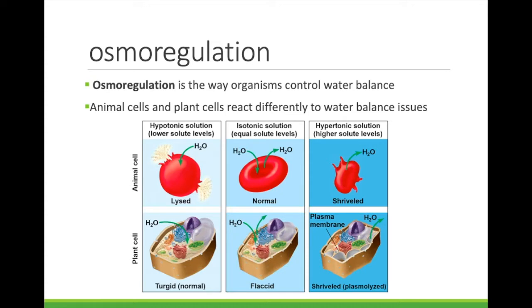Clearly, the solution surrounding a cell can have a big impact. Most cells have to regulate their water balance to maintain their function — this is called osmoregulation. One example is fish living in fresh water. The fresh water is hypotonic, so water tends to rush into the fish's body, and the fish's kidneys work extra hard to remove the excess water. This mechanism would not be effective if the fish were placed in salt water, where the hypertonic solution would cause the fish to lose water instead.